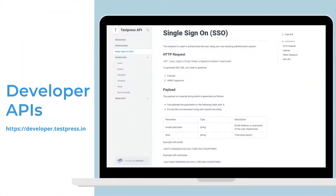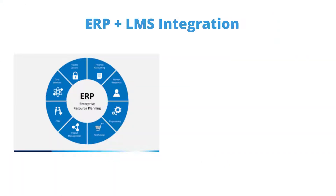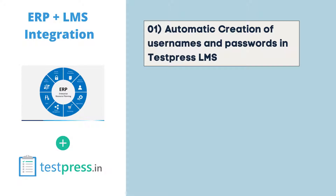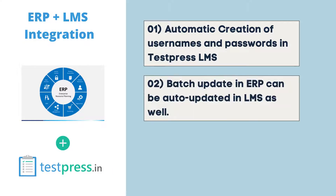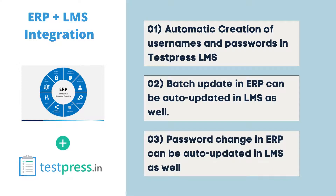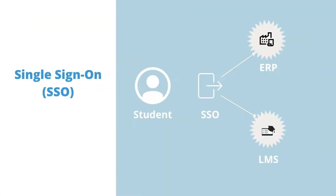6. Developer APIs. TestPress provides developer APIs to integrate with your applications. One important use is seamless integration with your existing applications. For example, when you create a username and password in your ERP, it can automatically be created in TestPress LMS through the API. When the admin changes the batch in the ERP, the batch is also changed in the LMS. When a student changes their password, it can be programmed to update in LMS as well. Using the SSO API, students can avoid logging into the TestPress portal if they have already logged into the ERP.